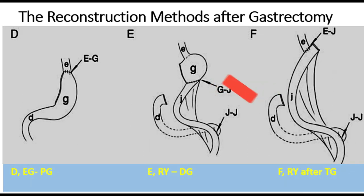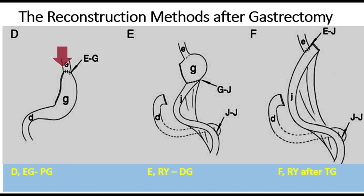Other options after gastrectomy: in Fig D, after proximal gastrectomy, we can do esophagogastrostomy — we pull the remnant stomach to the esophagus and perform the anastomosis — or it can be in the form of Roux-en-Y, where we bring the Roux loop and do gastrojejunostomy and duonostomy.